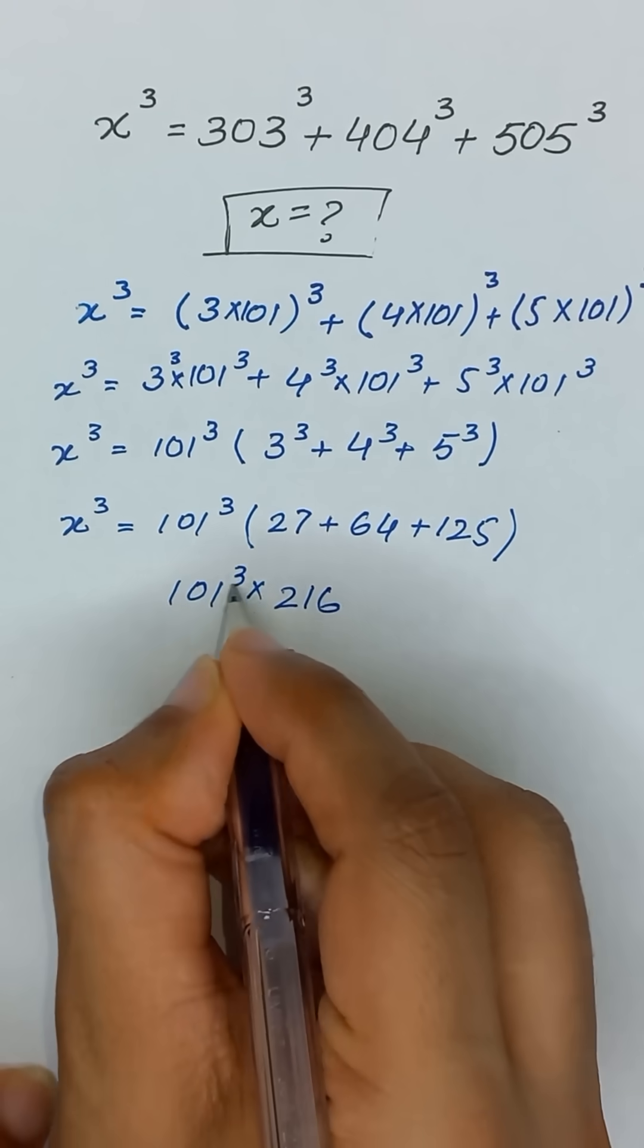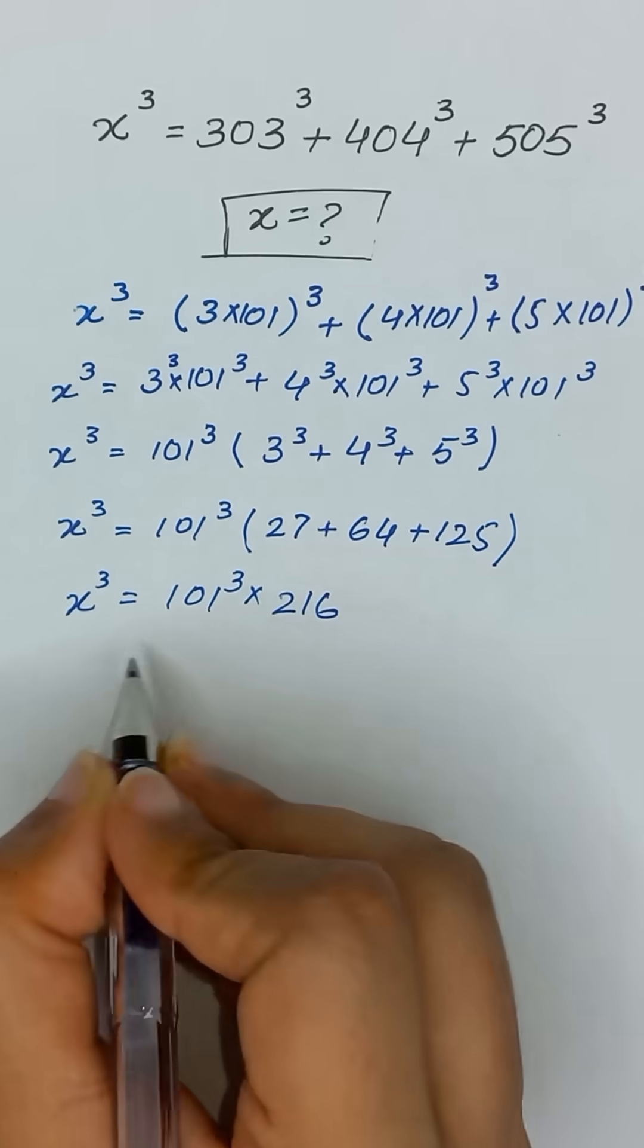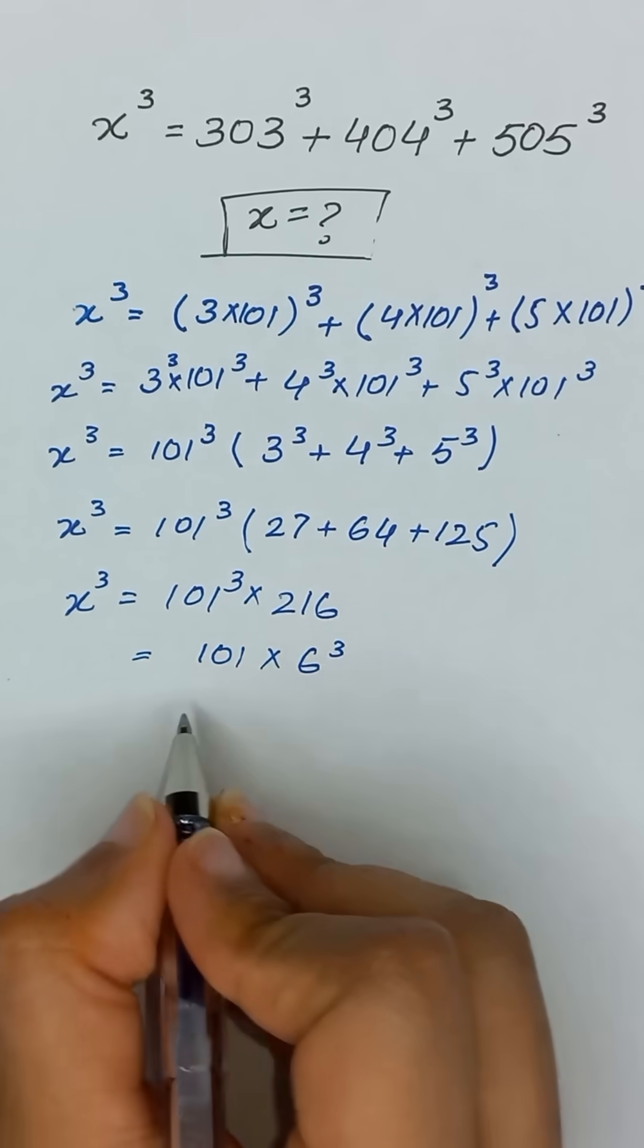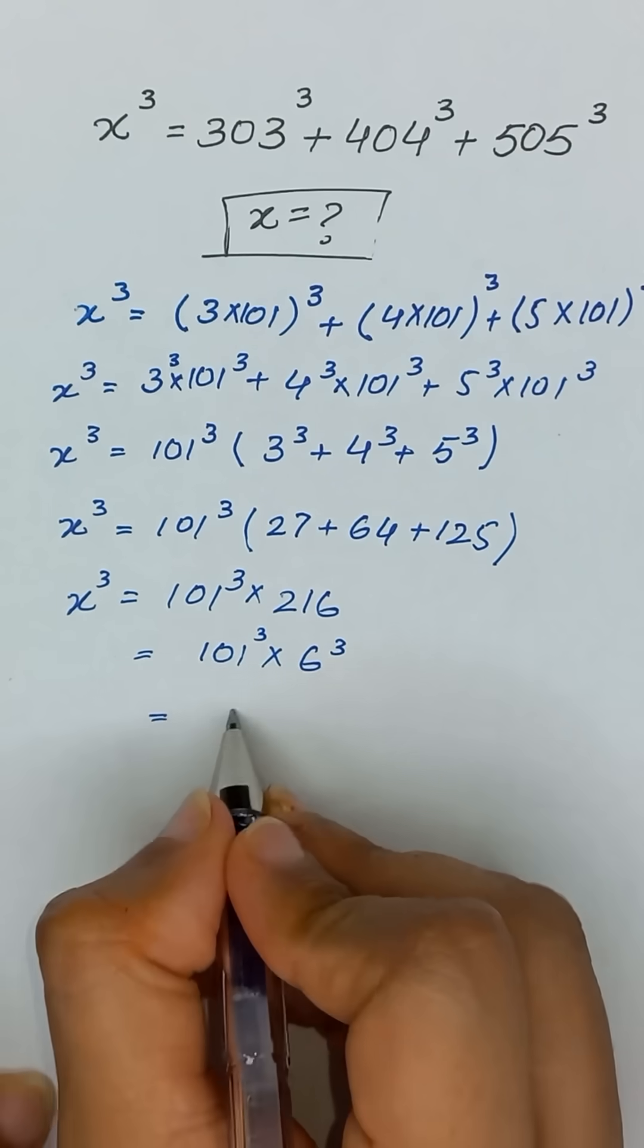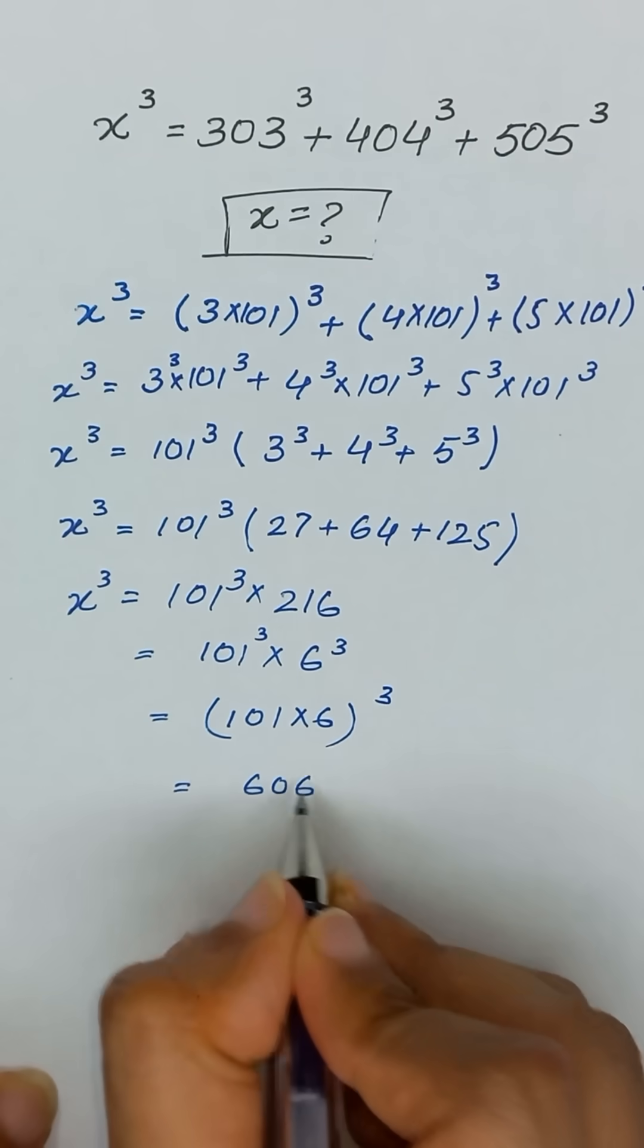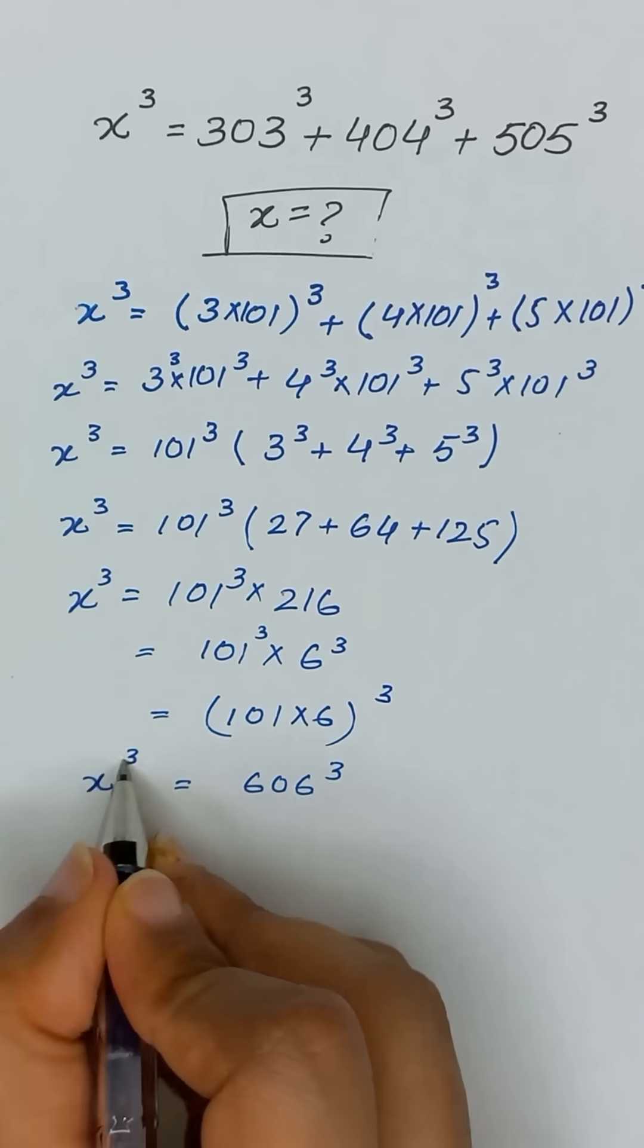Times 101 cube is equal to x cube. So 216 is same as 6 cube. So we can write it as 101 times 6 and its whole cube. So it will become 606 cube. And this side is x cube.